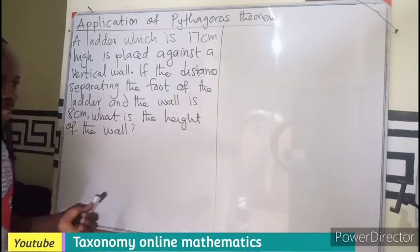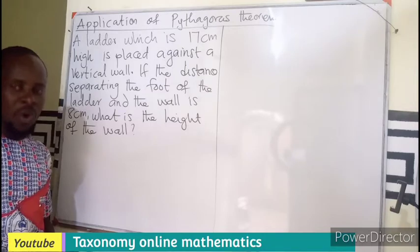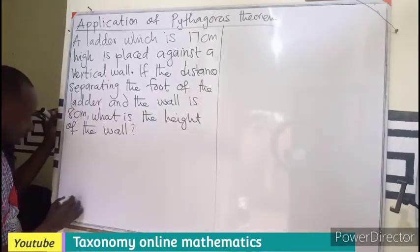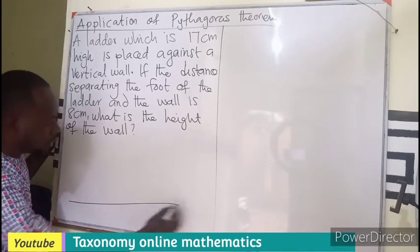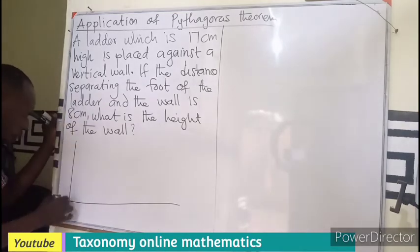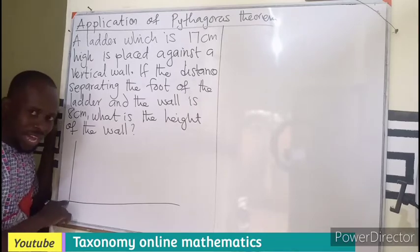So definitely we know a wall is going to be a vertical line or a vertical pole. If I in turn have my ground, a wall is always going to be on a ground. So the wall will be perpendicular to the ground.